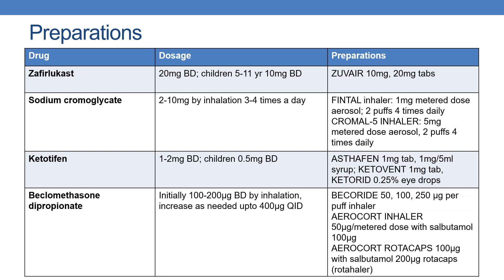The next drug is zafirlukast. The dose is 20 mg twice daily. Children 5 to 11 years of age: 10 mg twice daily. The preparation is Zuvair, available in 10 mg and 20 mg tablets.